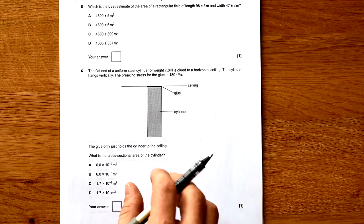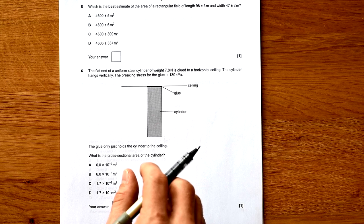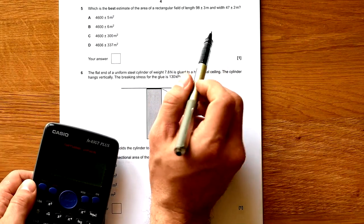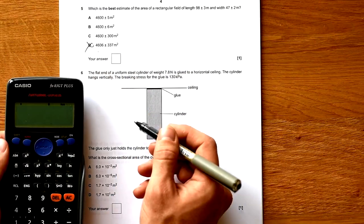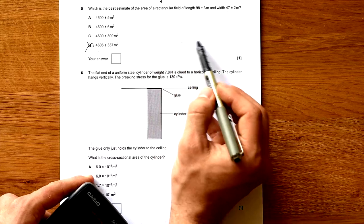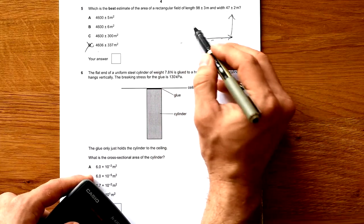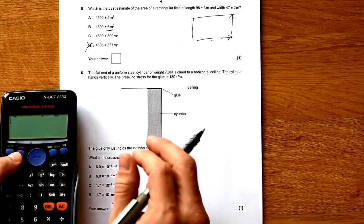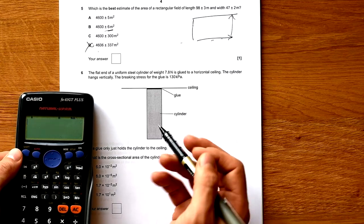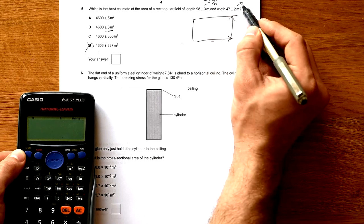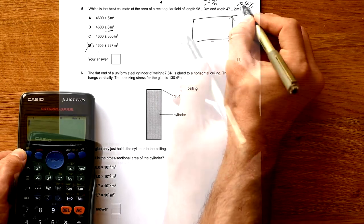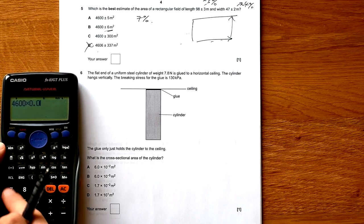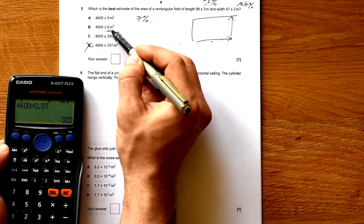Which is the best estimate of the area of a rectangular field of length 98 plus or minus 3 meters and width 47 plus or minus 2 meters? All these answers are pretty much the same, however we only have data to two sig figs. So it can't be D. But also have a look: if we're multiplying things together we need to use percentage uncertainties. This is about 3 percent and 2 out of 47 is about 4 percent. So altogether we're going to have a 7 percent uncertainty. 4600 times 0.07 gives us 322. It's going to be C.